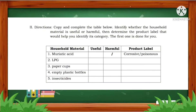On page 5, What's More. Direction: Copy and complete the table below. Identify whether the household material is useful or harmful, then determine the product label that would help you identify its category. The first one is done for you. Muriatic acid is harmful, and the product label it belongs to is corrosive or poisonous. When we say corrosive, children, it can cause severe burns.